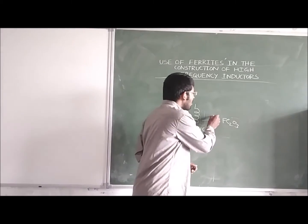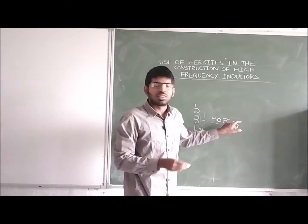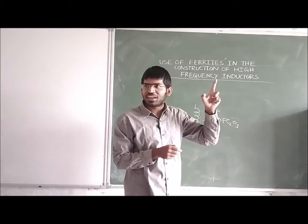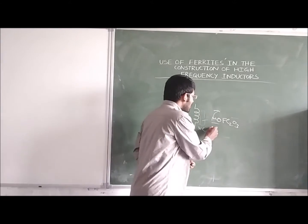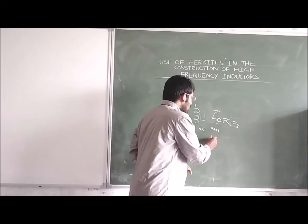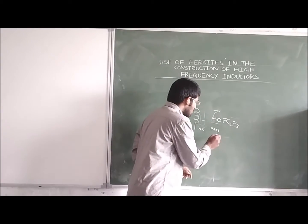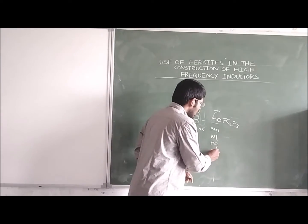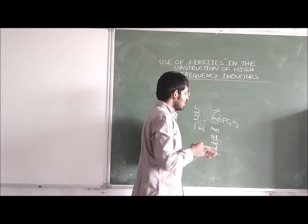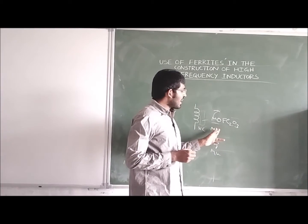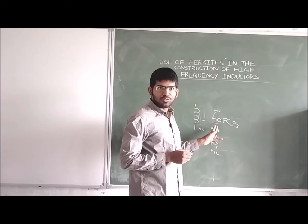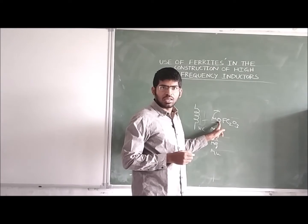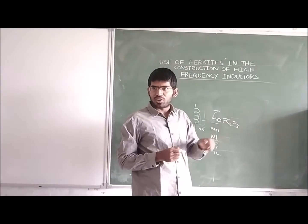That's why we choose ferrite core materials for high frequency inductors. The chemical formula of ferrite is MFe₂O₃, where M is the metal. If we change the metal, the type of ferrite changes. For example, we can use manganese, nickel, magnesium, or microwave ferrites. Here O is oxygen and Fe₂O₃ is ferrous oxide — that's what we call ferrite.